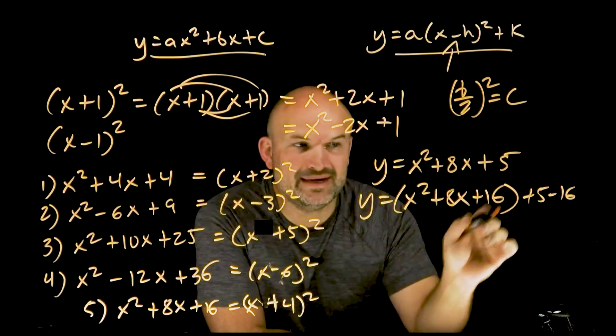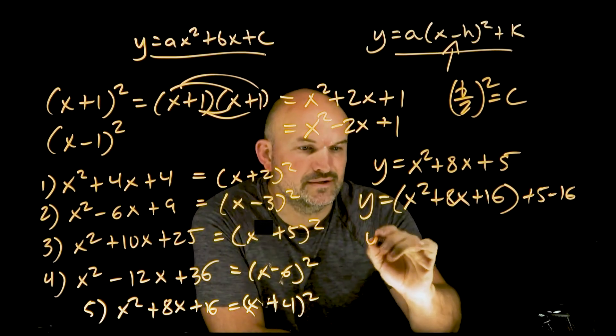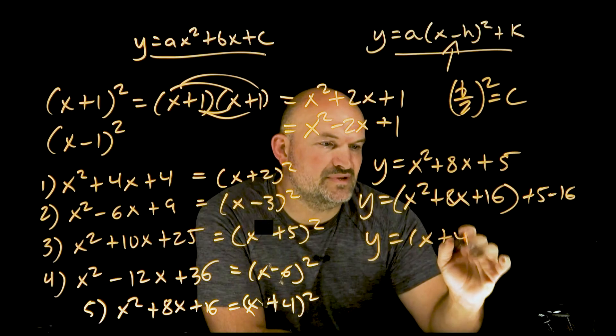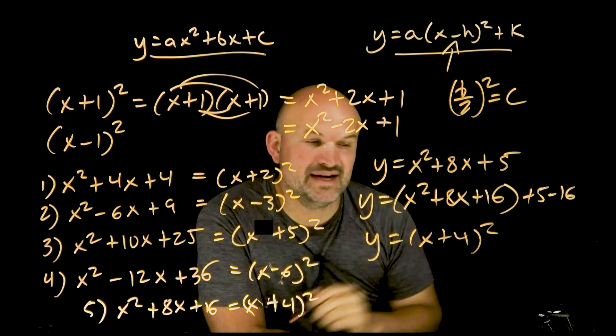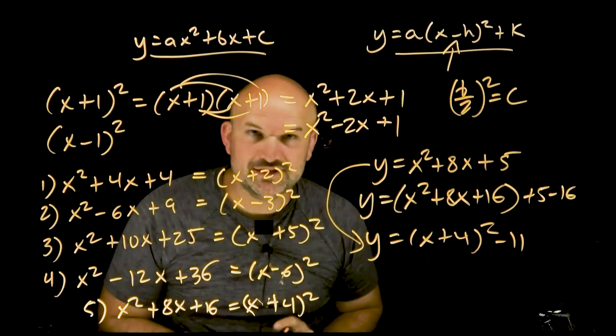Now here, ladies and gentlemen, I'm so comfortable with my perfect square trinomials, I know what the factored form is: (x+4)². So y=(x+4)², and then 5-16 is going to be -11. You can see now, ladies and gentlemen, I went from standard form all the way to vertex form.